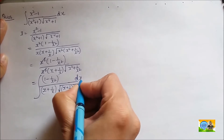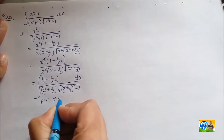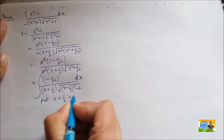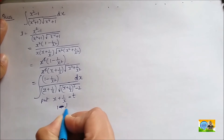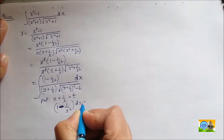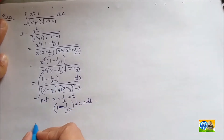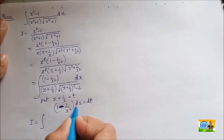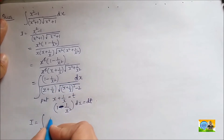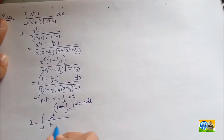So let us put t = x + 1/x. If I differentiate both sides, (1 - 1/x²) dx = dt. Substituting this into the integral, the numerator becomes dt, the denominator becomes t times the square root of t² - 2.